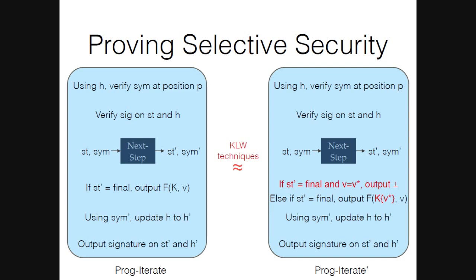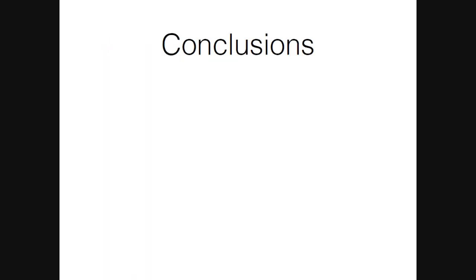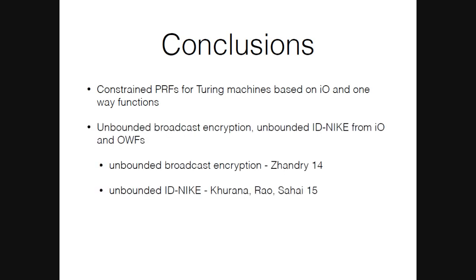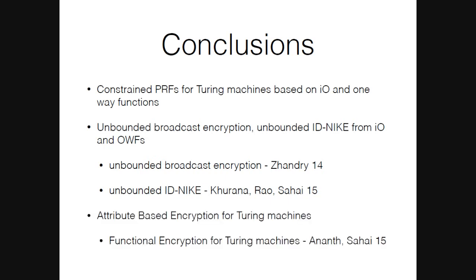To conclude, we construct constrained PRFs for Turing machines based on IO and one-way functions, and this directly gives us unbounded broadcast encryption and unbounded identity-based non-interactive key exchange. While constructions for these primitives existed before, our work unifies them. We also show attribute-based encryption for Turing machines, which is much simpler than the functional encryption construction. Thank you.